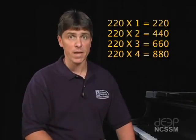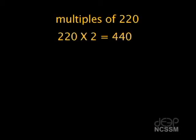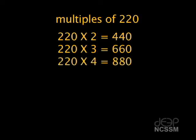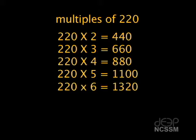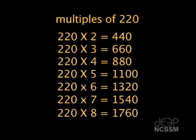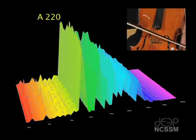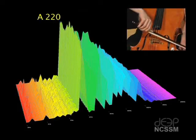Multiples of 220 include the following numbers. 220 times 2 equals 440. 220 times 3 equals 660. 220 times 4 equals 880. 220 times 5 equals 1,100. 220 times 6 equals 1,320. 220 times 7 equals 1,540. 220 times 8 equals 1,760. Look again at the 3D representation of the cello's A220. Can you see the wave at each of these frequencies?